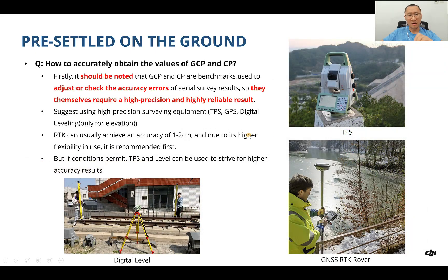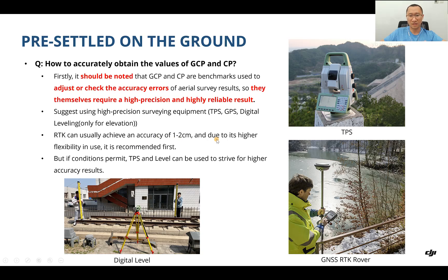How to accurately obtain the values of GCP and CP? It is very important to know that GCPs and CPs are the benchmarks used to adjust and check the accuracy of aerial survey results, so they themselves require high precision and reliability. We suggest using high-precision survey equipment such as a total station, GPS, or digital level for terrain. The RTK can usually achieve accuracy of one to two centimeters, and due to its higher flexibility, it is recommended first, but total station and leveling can also be used for higher accuracy.